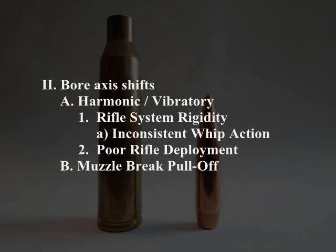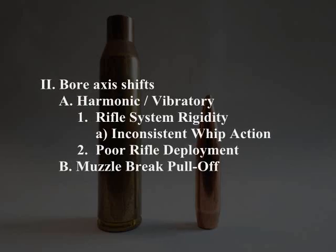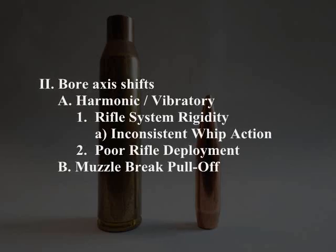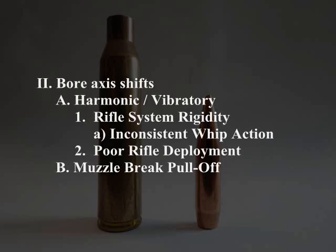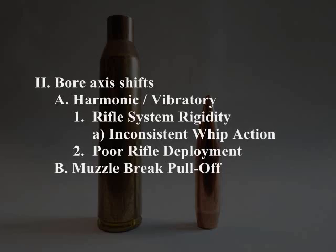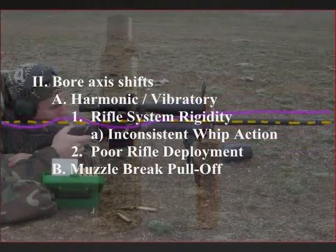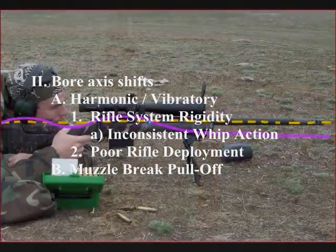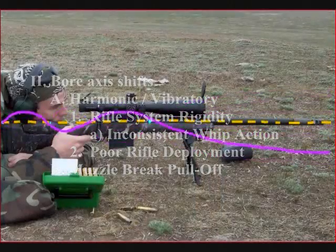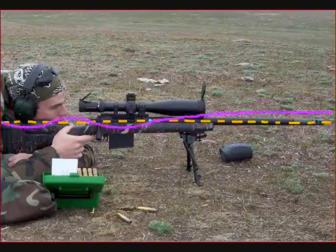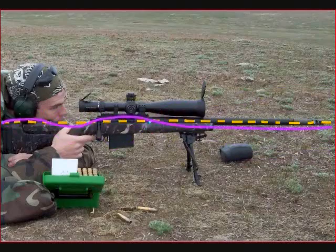We're also going to discuss ammunition inconsistencies under the topic of harmonic and vibratory inconsistencies. If your ammunition is not perfectly consistent, you're going to have variations in how your rifle vibrates when you pull the trigger. We'll discuss powder charges, case inconsistencies, and proper primer seating. All of this affects bore axis shifts — which means changing the direction your bore is pointing. If the end of your barrel is doing whip action, it's going to be pointing in different directions at any given millisecond, so keeping that consistent is a priority.